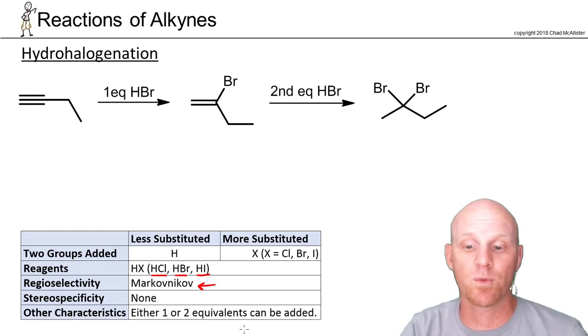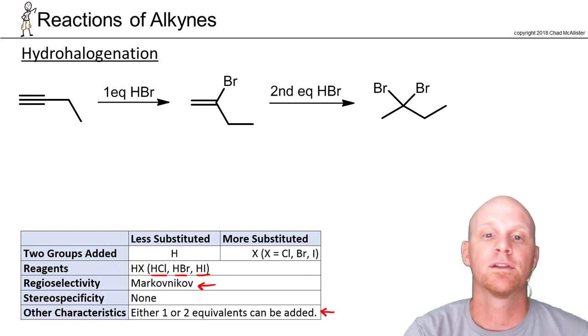The H goes on the less-substituted side, the bromine on the more-substituted side. In this case, it does not have any stereospecificity, and we can regulate it. We can add either one equivalent or two.